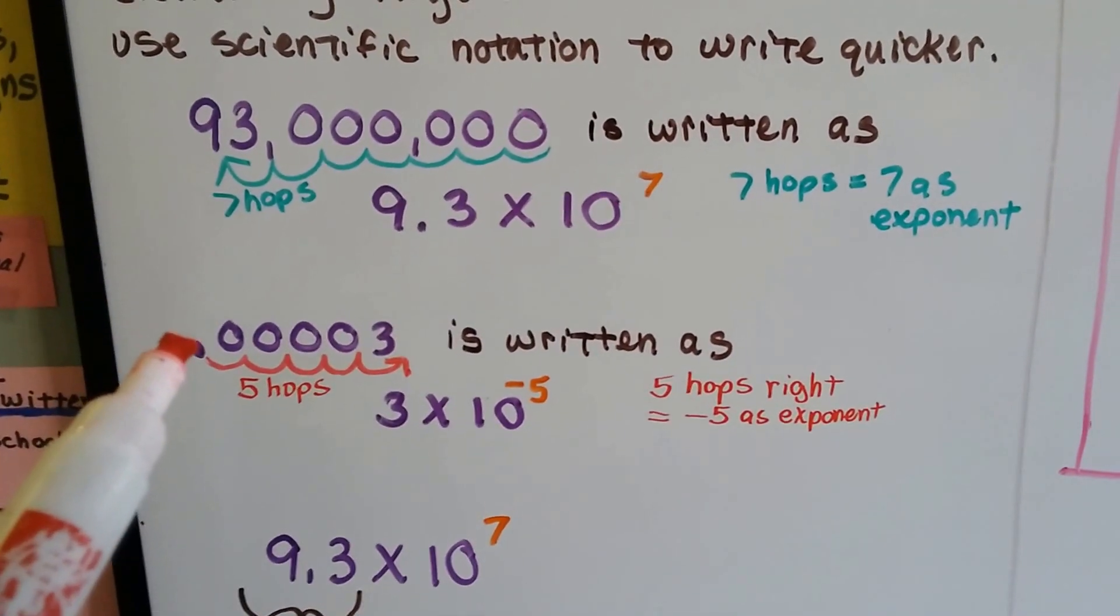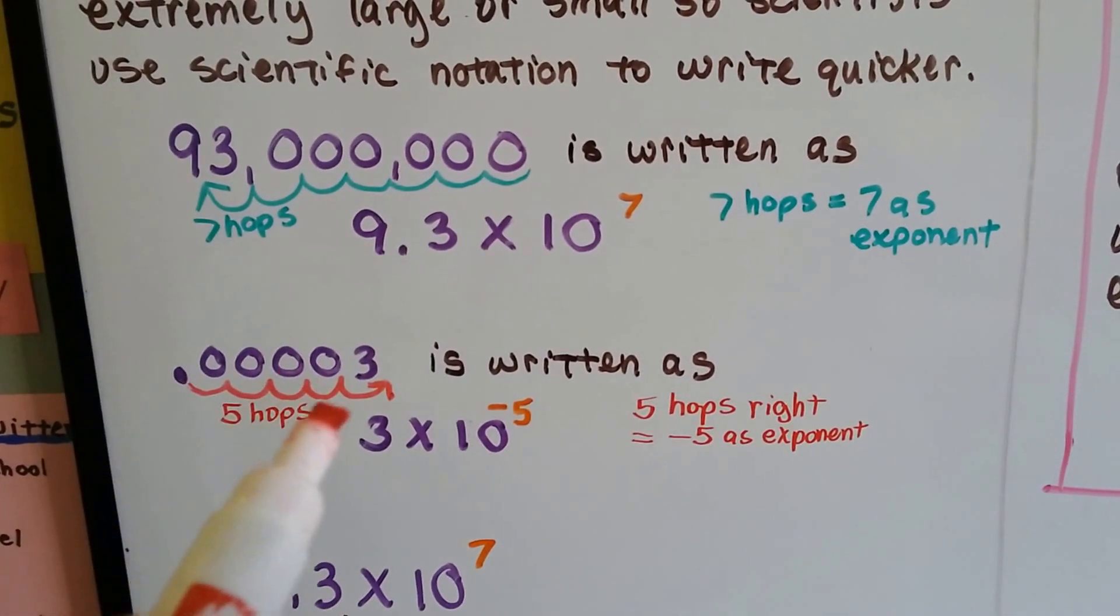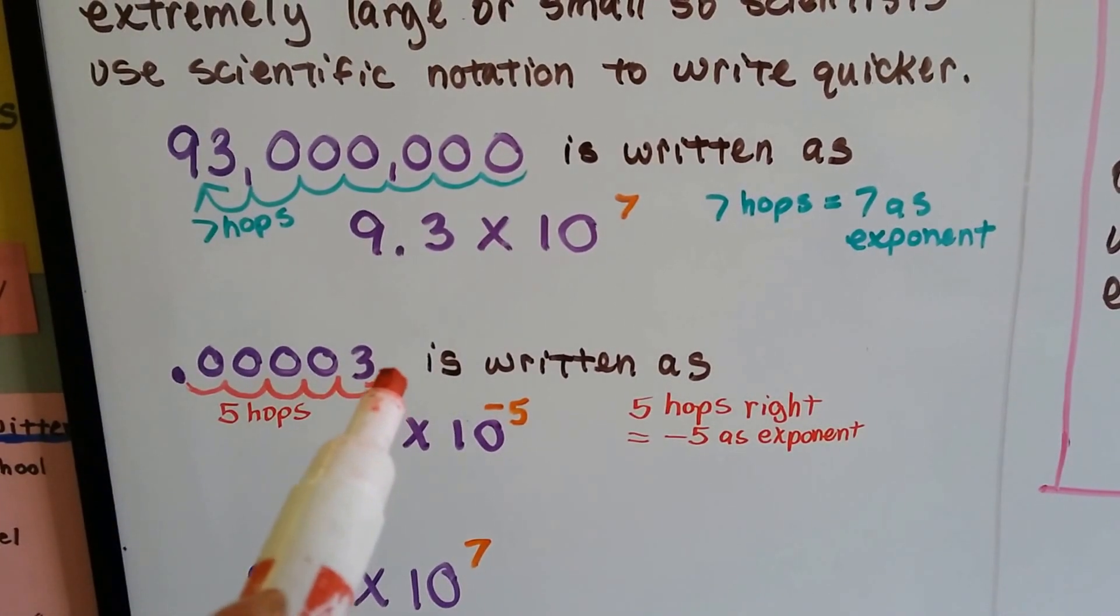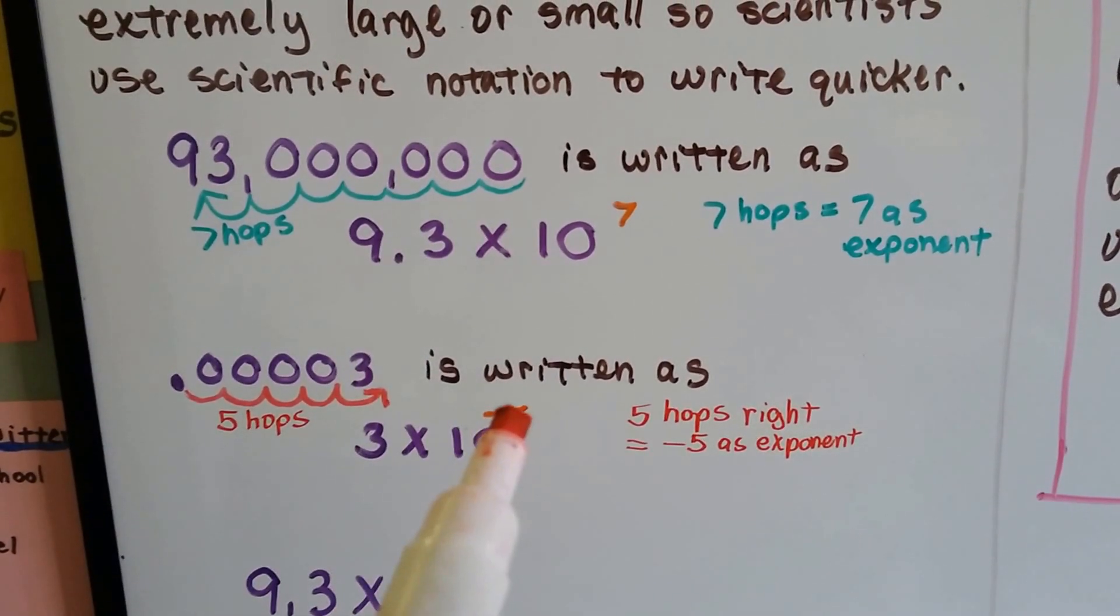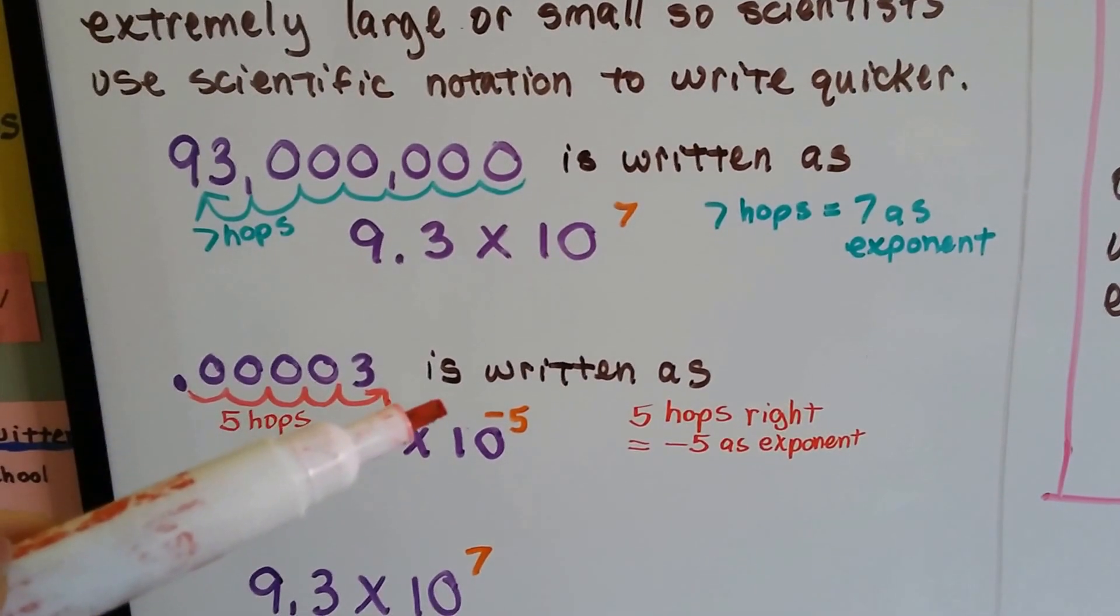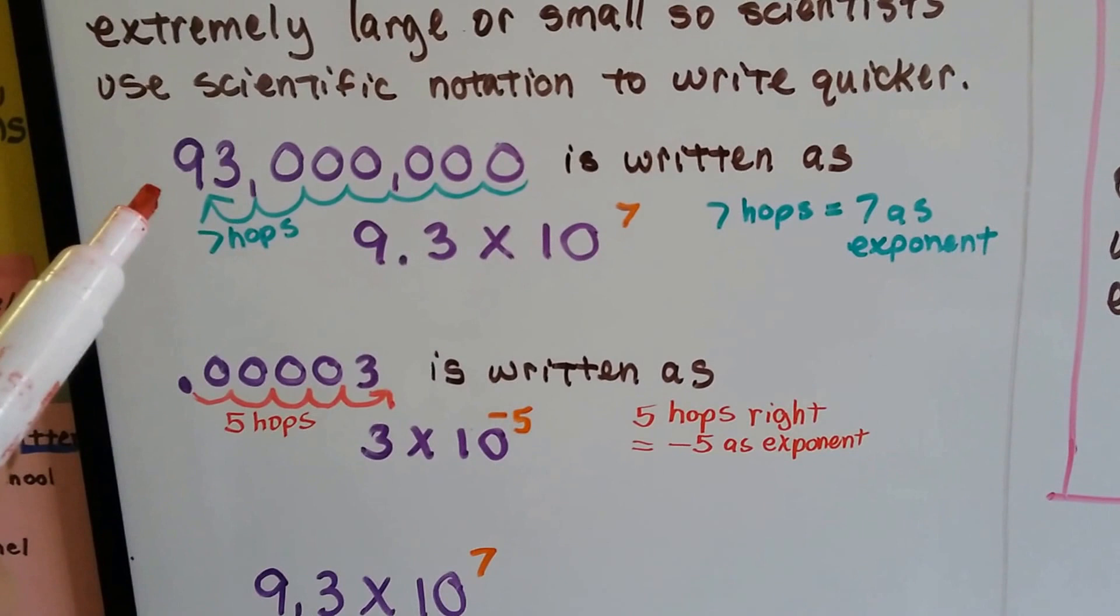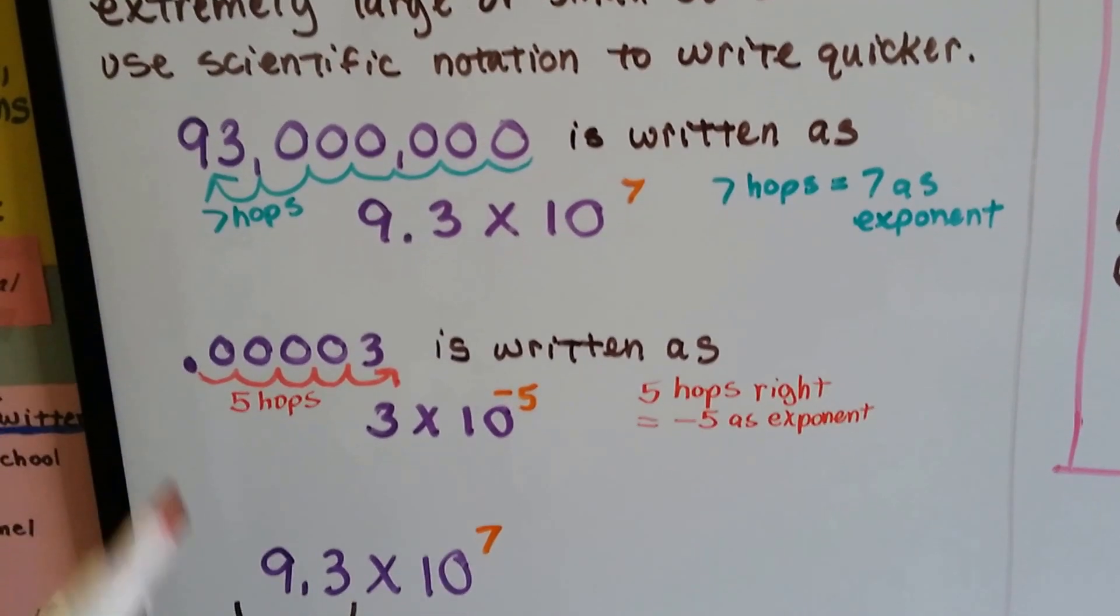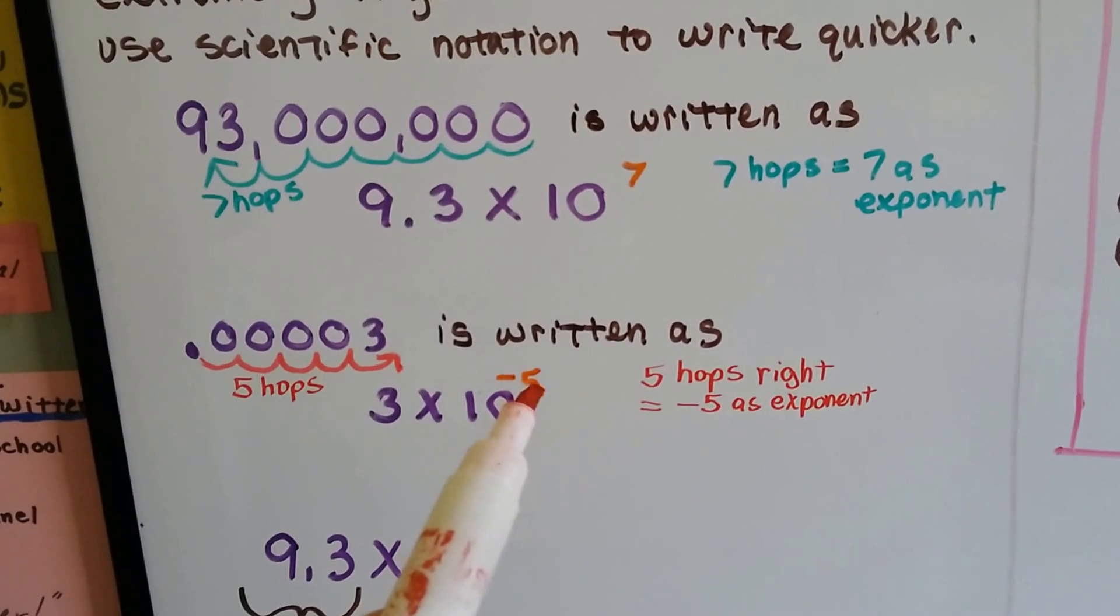If we've got a decimal like 0.00003, we can move 1, 2, 3, 4, 5 hops to behind the 3, and it can be written as 3 times 10 to the negative 5. When we went this way into the decimal, we made a negative exponent. When we moved to the left, we made a positive exponent. The 5 hops towards the right equals a negative 5 as an exponent.